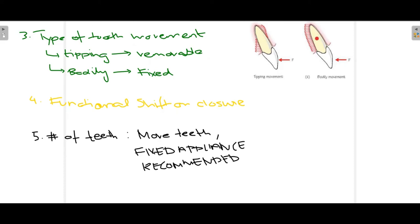For bodily movement, the whole tooth — both root and crown — moves in whatever direction the dental surgeon requires, whether buccal, lingual, mesial, or distal. When bodily movement is required, we use a fixed appliance. The fourth factor to consider is functional shift on closure.